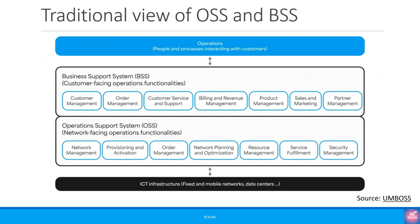Here is a simple and helpful diagram that shows how OSS and BSS have traditionally fit within a telecom network. It provides a high-level view of how these systems interact with both the underlying network infrastructure and the customer-facing side of operations. While the actual architecture may be more complex in real deployments, this visual gives a good starting point to understand the typical positioning and roles of OSS and BSS in a traditional setup.